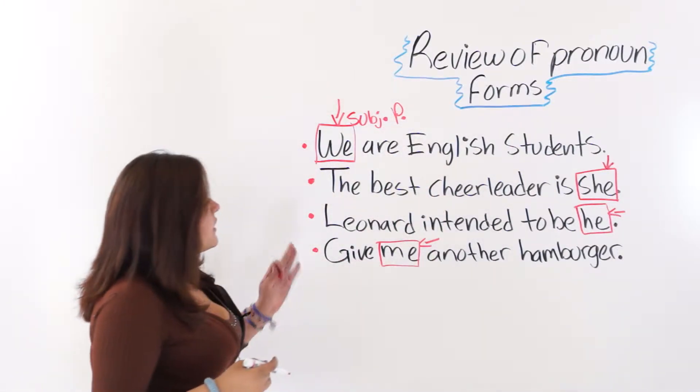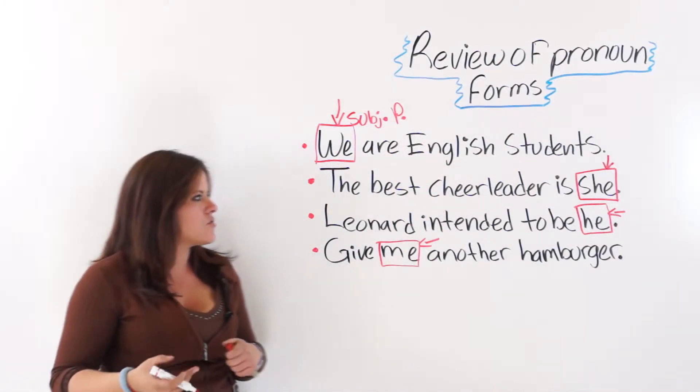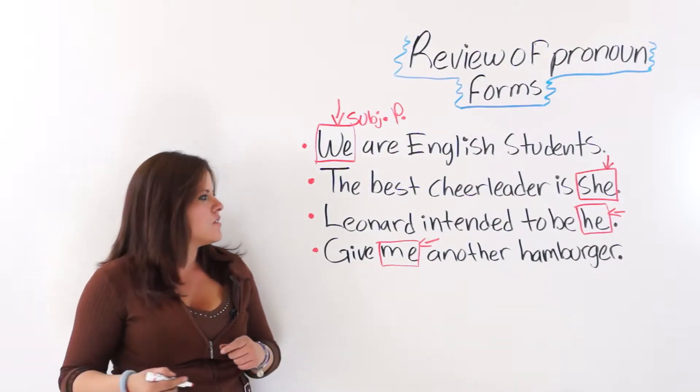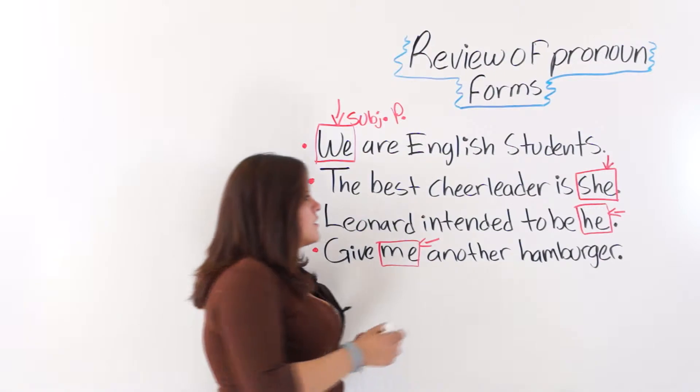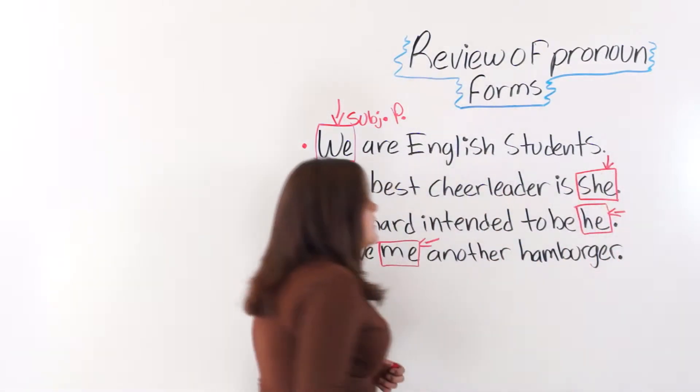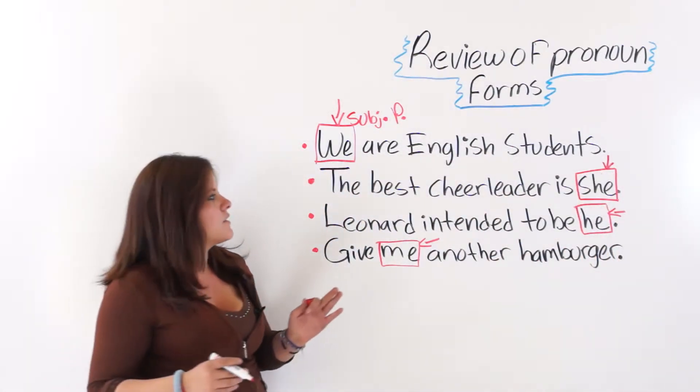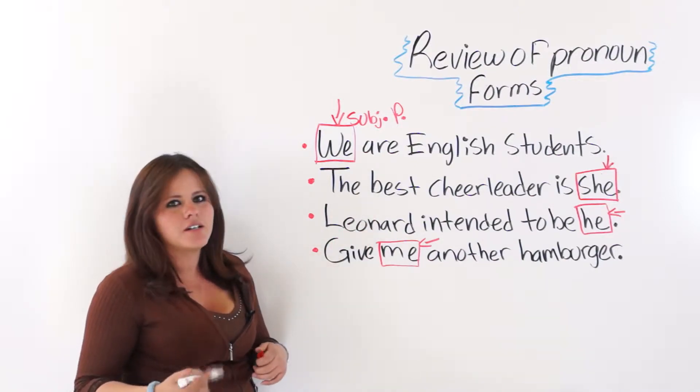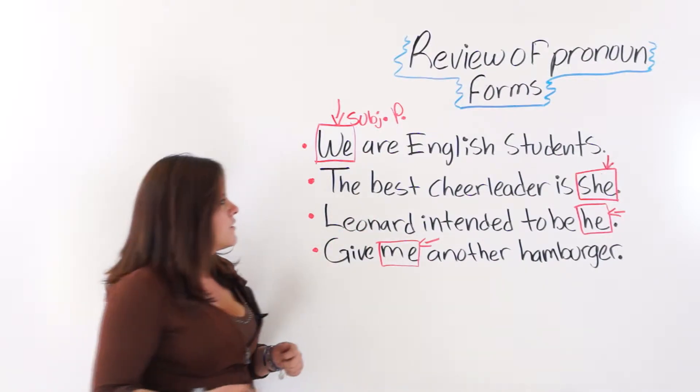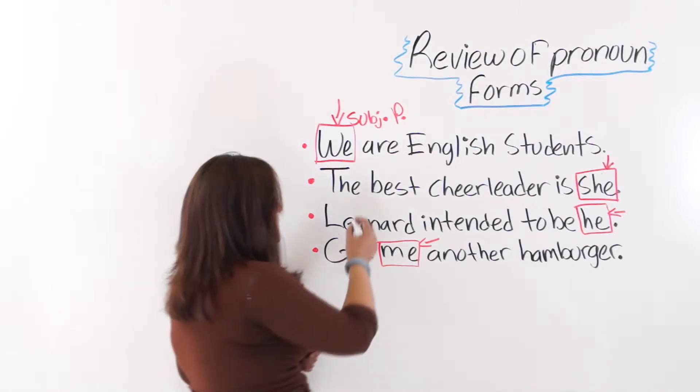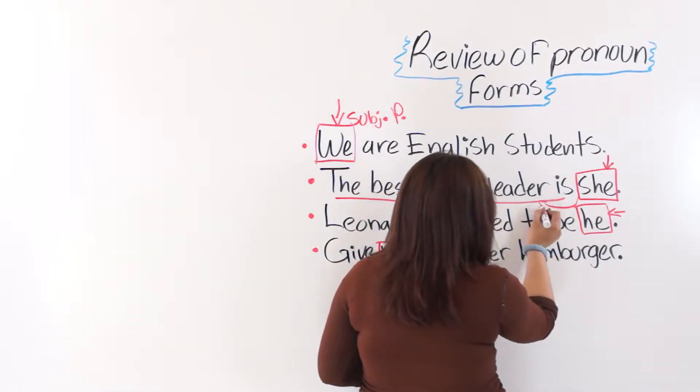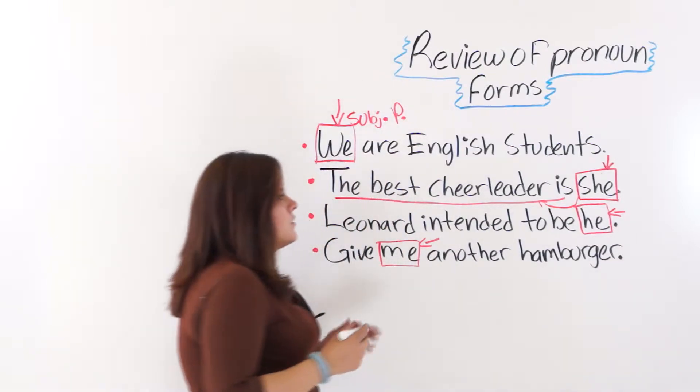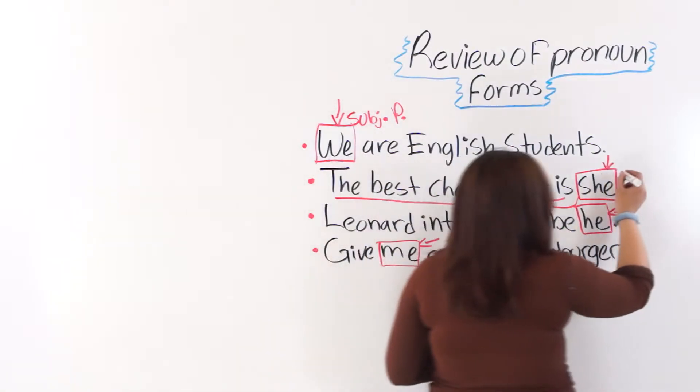The next one is, the best cheerleader is she. This here cannot be the subject of the sentence. This is simply a complement of the subject. The best cheerleader is the subject, and this is a complement of this subject here. So this makes it a complement.